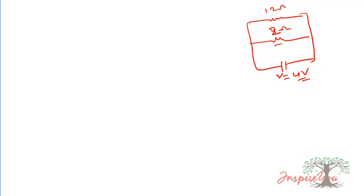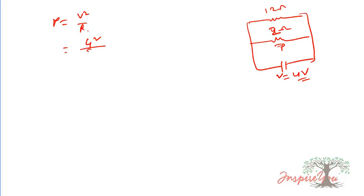Using P = V²/R or P = I²R. The 2 ohm resistor with a 4 volt source: P = V²/R = 4 squared divided by 2 = 16/2 = 8 watt.